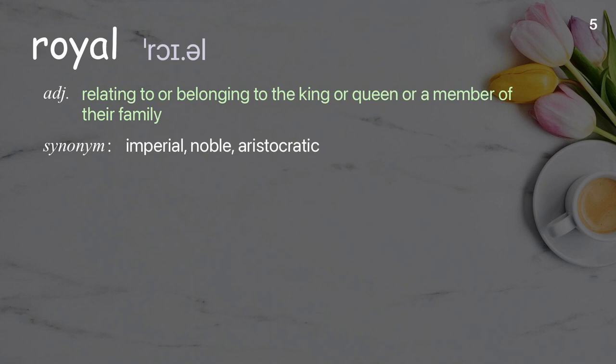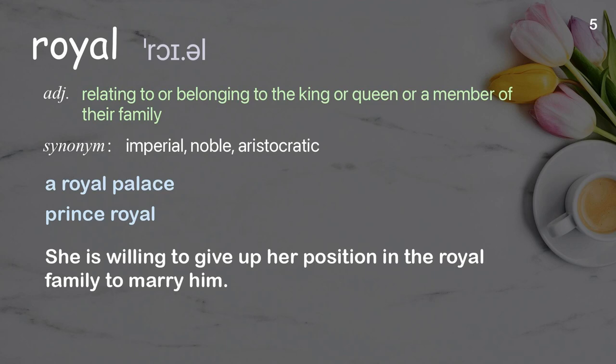Royal: Relating to or belonging to the king or queen or a member of their family. Examples: A royal palace. Prince royal. She is willing to give up her position in the royal family to marry him.